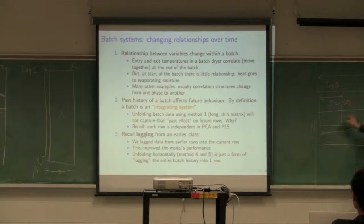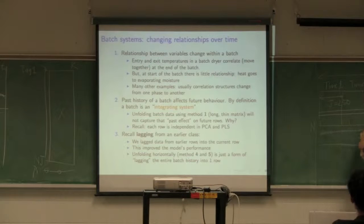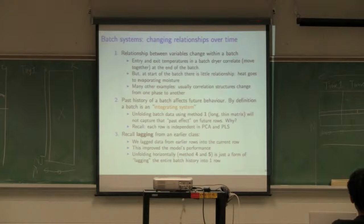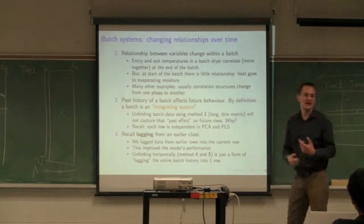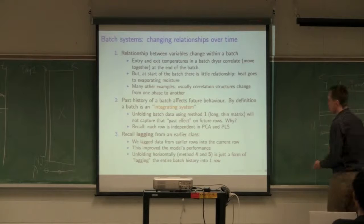You've got to capture the past effect to the future. The only way you're able to do that is by this unfolding here. If I take one row representing one batch, things that happen earlier in the batch must propagate to the end. That previous history is stored all within one row and the model will build up and use that. It's the same idea that we saw with lagging. We used lagging to fool the model into using previous data from observations, shifting them down so the model can see process history all within the same row.